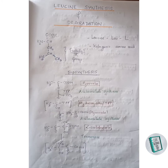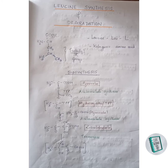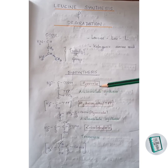The first five steps of leucine synthesis are similar to those of valine synthesis, described in detail in a separate video. The starting material for biosynthesis is pyruvate.